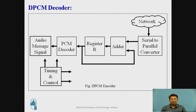At the decoder side, the data is arranged by a serial-to-parallel converter. This converts the serial data into parallel. It is then added with the predicted value from the register. This added value is decoded by the PCM decoder to obtain the audio message signal.